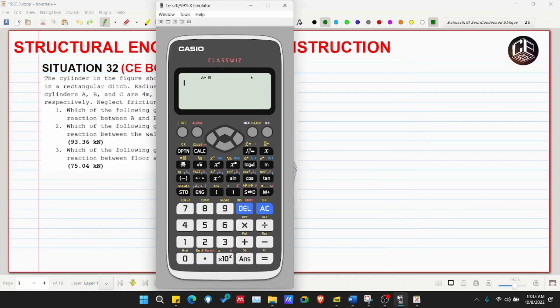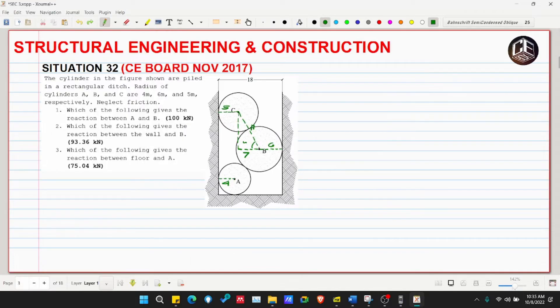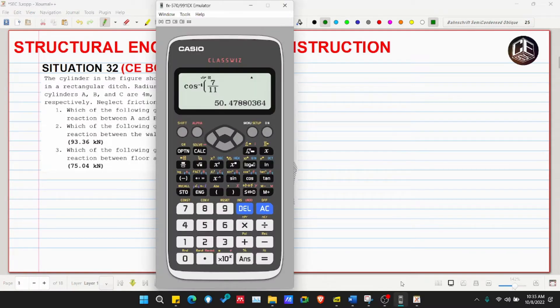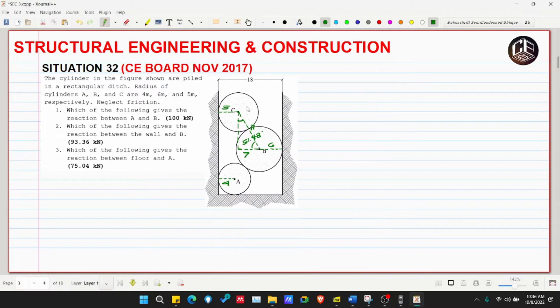Let's calculate this directly. If this is the hypotenuse, this is adjacent. So that is cosine, the adjacent is seven, the hypotenuse is eleven. Arc cosine of adjacent over hypotenuse. So this is 50.48 degrees. And this is 90 minus that answer, so 39.52 degrees.